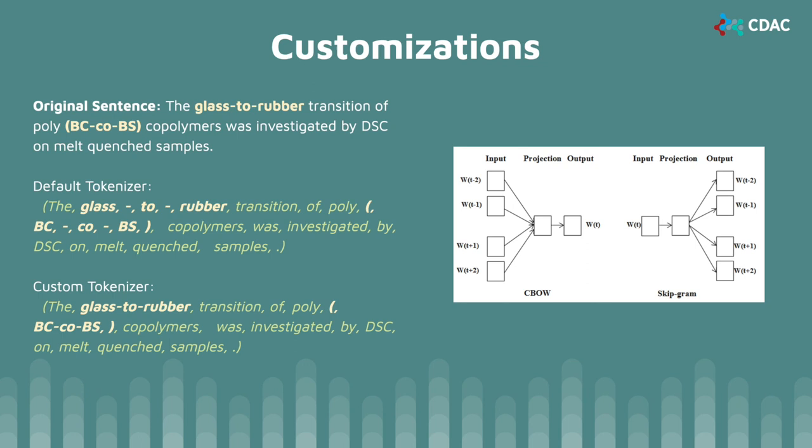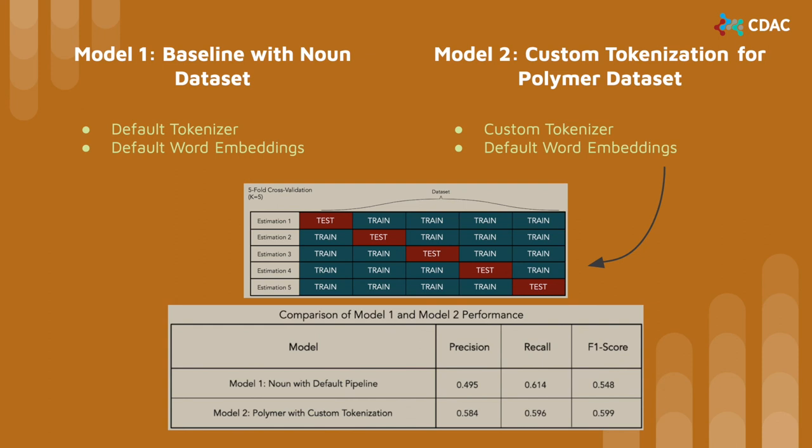Another method for customization we used for the third model was training custom word embeddings. Word embeddings are vector representations of words that capture something about their meaning. We used custom word embeddings for the third model because this will allow the model to have familiarity with the vocabulary used in the dataset. To train our word embeddings, we used CBOW and skipgram, which are two popular word embedding algorithms. The precision, recall, and F1 scores of both model 1 and model 2 are shown in the bottom table. Both F1 scores are similar, proving that our baseline model can be applied to another dataset from a different domain.